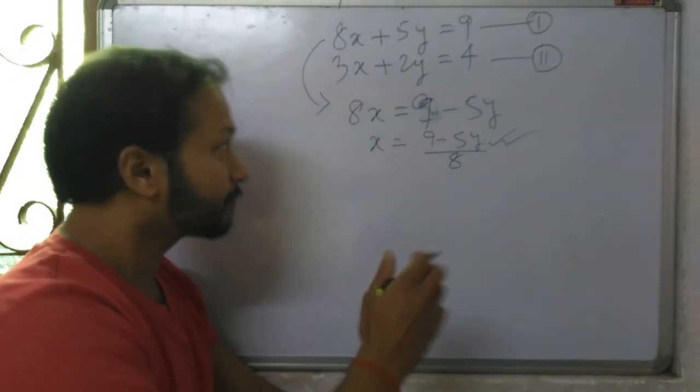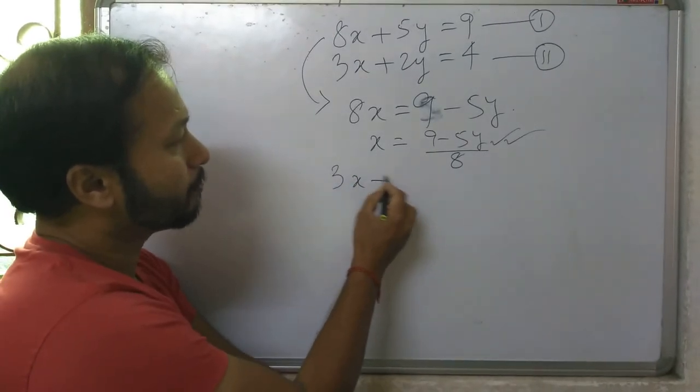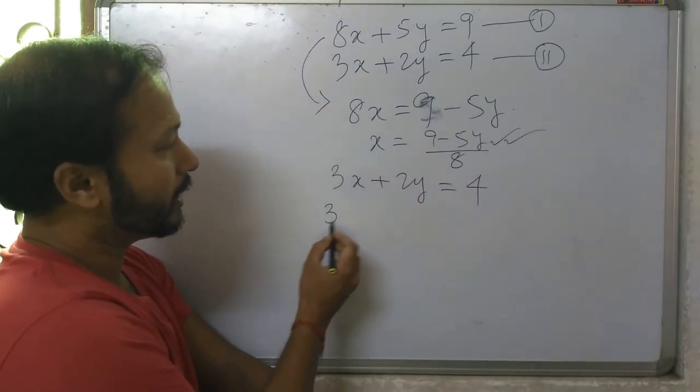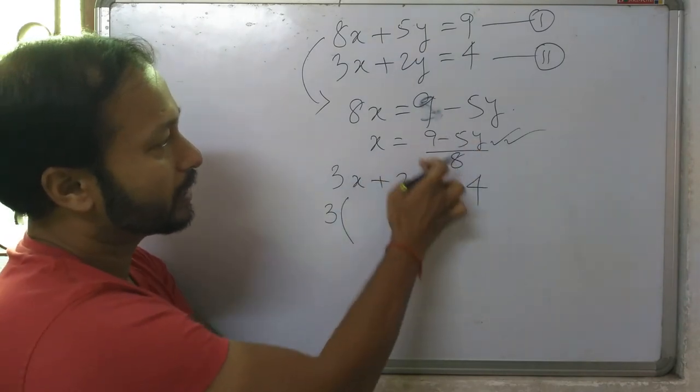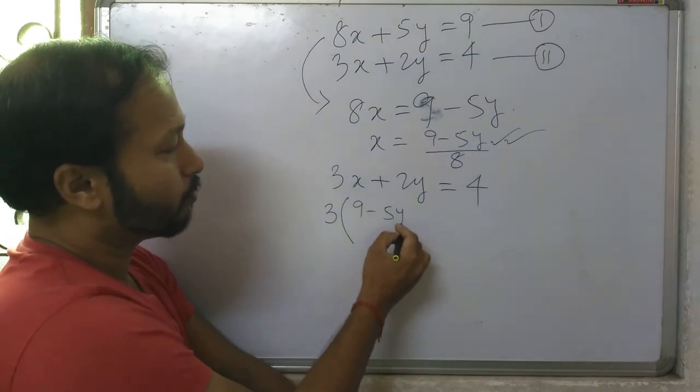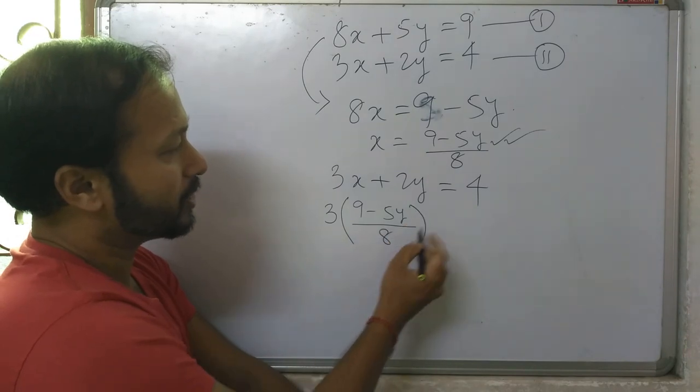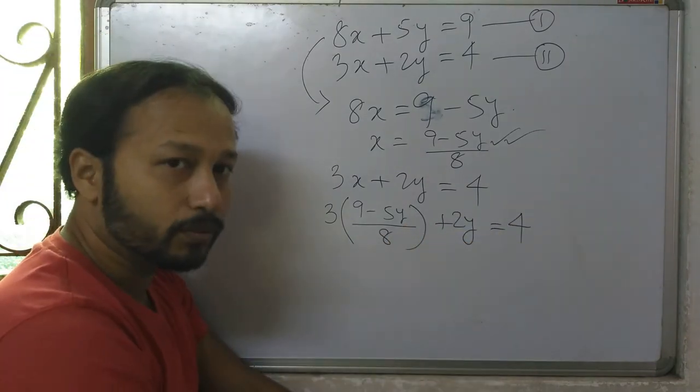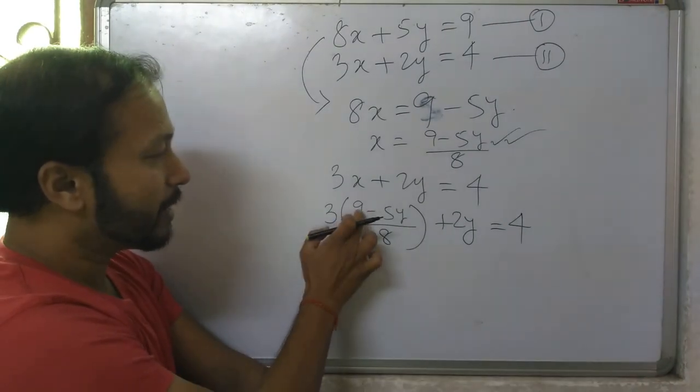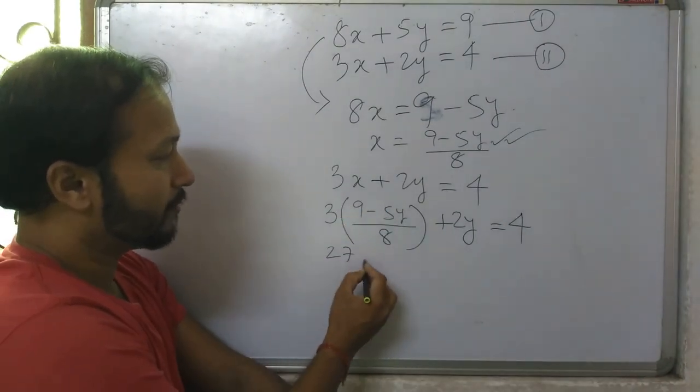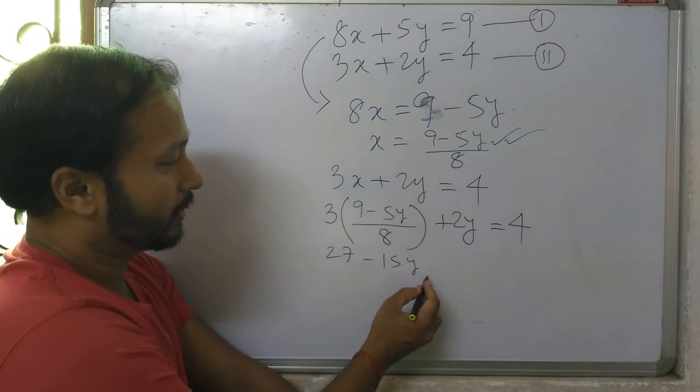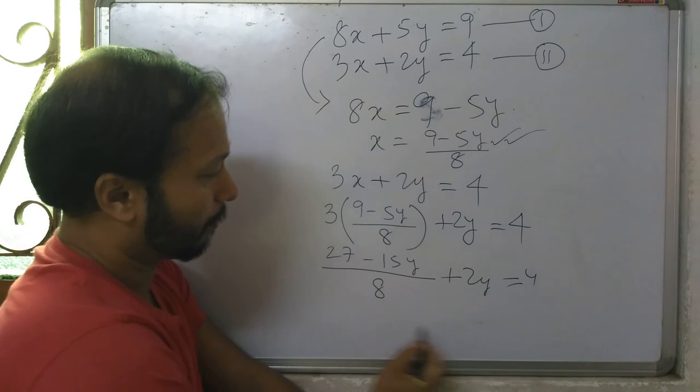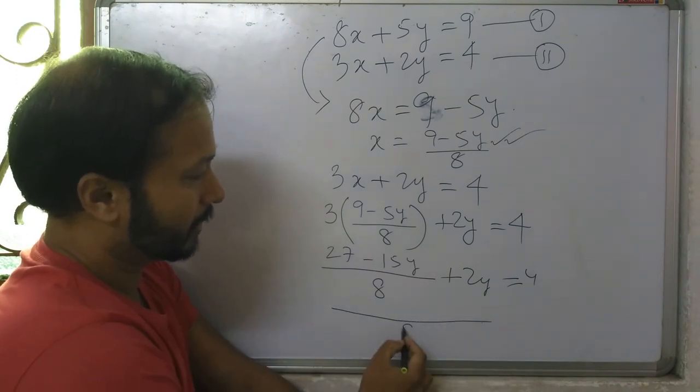Let's see: 3x plus 2y equals 4. 3x means 3 times 9 minus 5y by 8, plus 2y equals 4. Multiplying 3 by this, we get 27 minus 15y by 8, plus 2y equals 4.